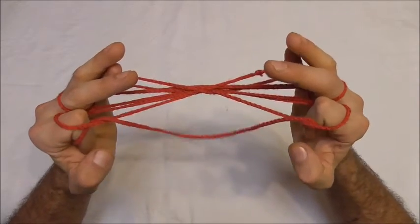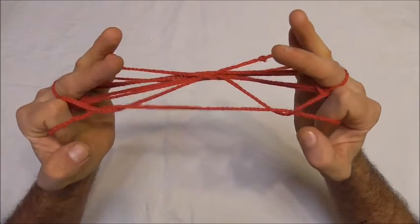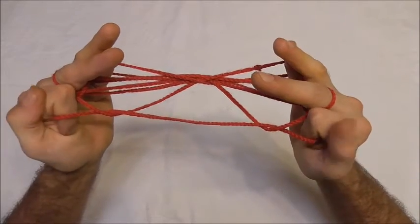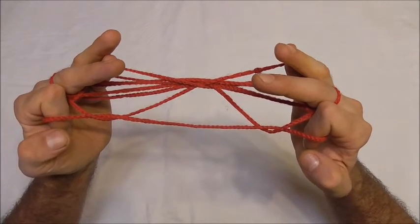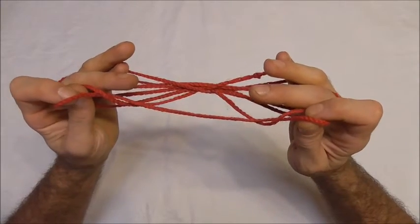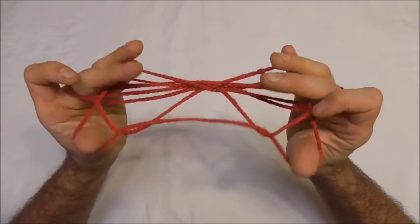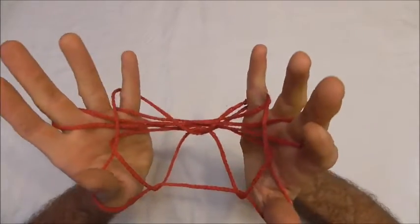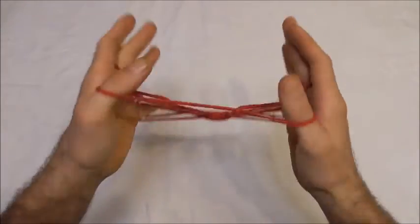I'm going to drop the thumbs and then drop the loops that were on the back of those pointer fingers, and then I just want to insert my thumbs where the pointer fingers are and you should get the finished butterfly.